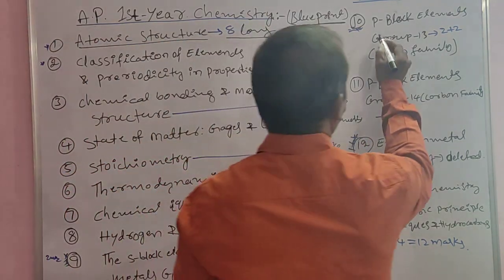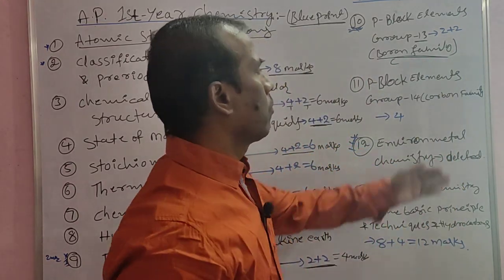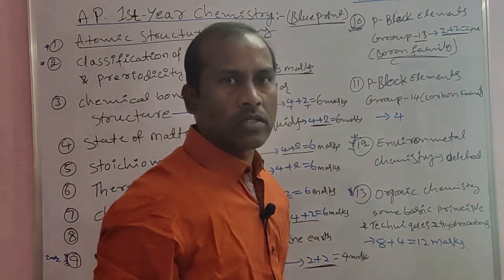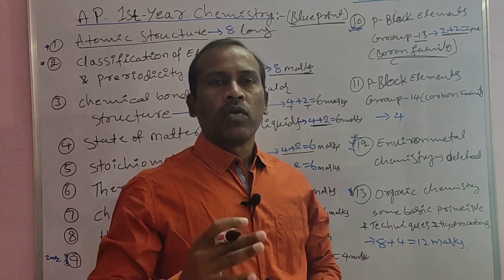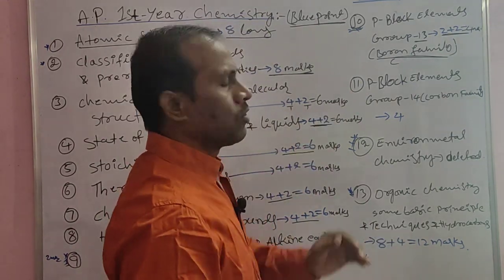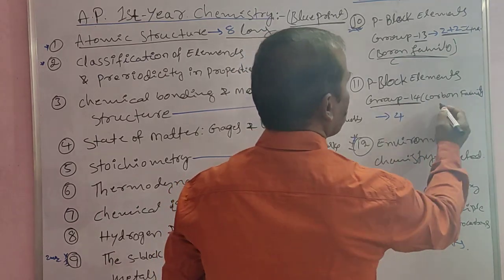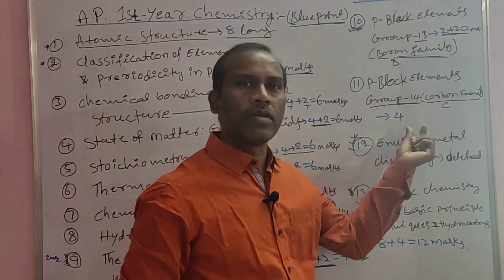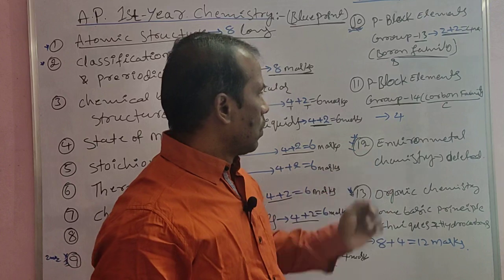The tenth topic is P-Block Elements, specifically Group 13 — the Boron family. The eleventh topic is also P-Block Elements, Group 14 — the Carbon family. From the eleventh topic, P-Block Elements Group 14 (Carbon family), there is one short answer. So both P-Block topics — Groups 13 and 14 — are important for the exam.